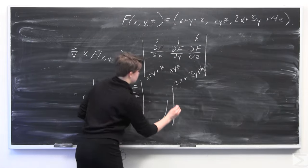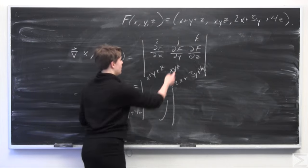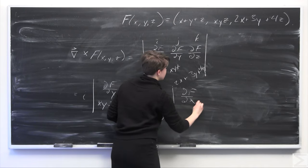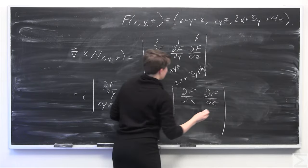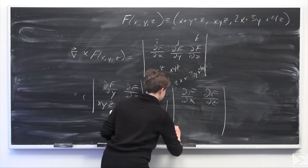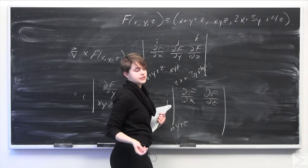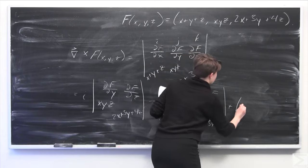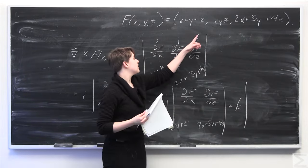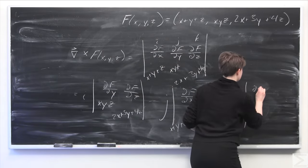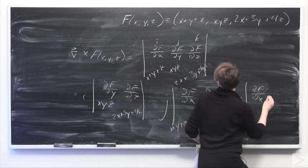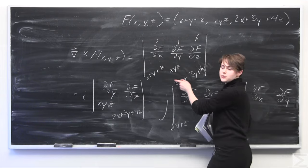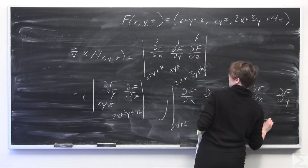The second component is minus j, by cofactor expansion — remember there is a minus sign in front of the j component. We cancel out the second column and first row, giving us ∂/∂x and ∂/∂z in the top row, and x plus y plus z and 2x plus 3y plus 4z in the bottom row. Finally, the k component is found by canceling the third column and first row: ∂/∂x and ∂/∂y on top, and x plus y plus z and xyz on the bottom.